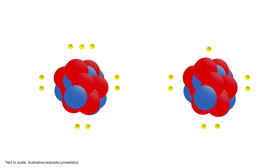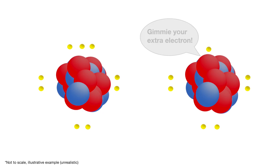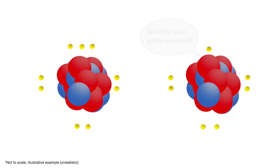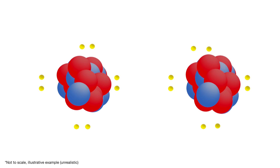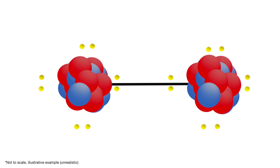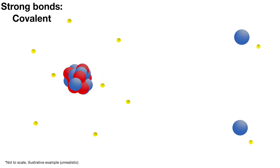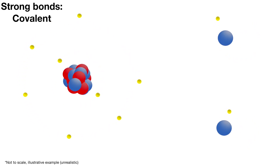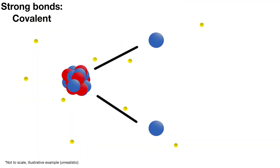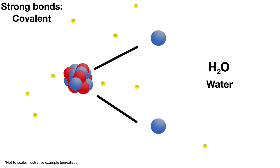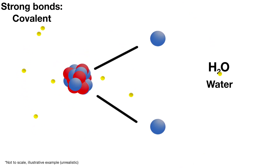Remember that opposite charges attract. A cation is inherently attracted to an anion, and that attraction can lead to a chemical bond. There are two broad types of chemical bonds: strong bonds and weak bonds. Strong bonds involve the transfer or sharing of electrons between atoms, and are held together by intramolecular forces, or forces within the molecule. Recall that a molecule is a group of atoms bonded together. In covalent bonding, two or more atoms share pairs of electrons between them. The electrons in covalent bonds orbit all the atoms involved in the bond, in a sort of tug of war over electrons between atoms.